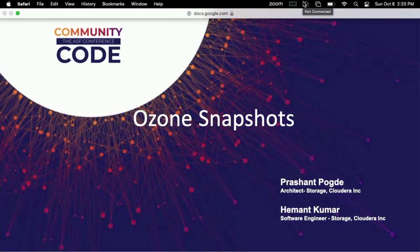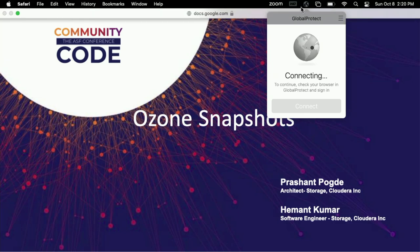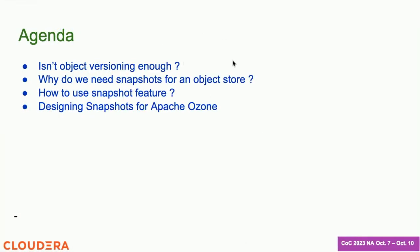Let's take a look at this feature snapshot, and this is the agenda of today's talk. First we will talk about why we are building a snapshot for Ozone, and if you look at other object stores out there they support something similar called object versioning, and we will talk about why that feature is not enough. We will also look at different use cases that snapshots enable, and once we know why we are building it we will talk about how to use it and look at how we are designing it for Ozone.